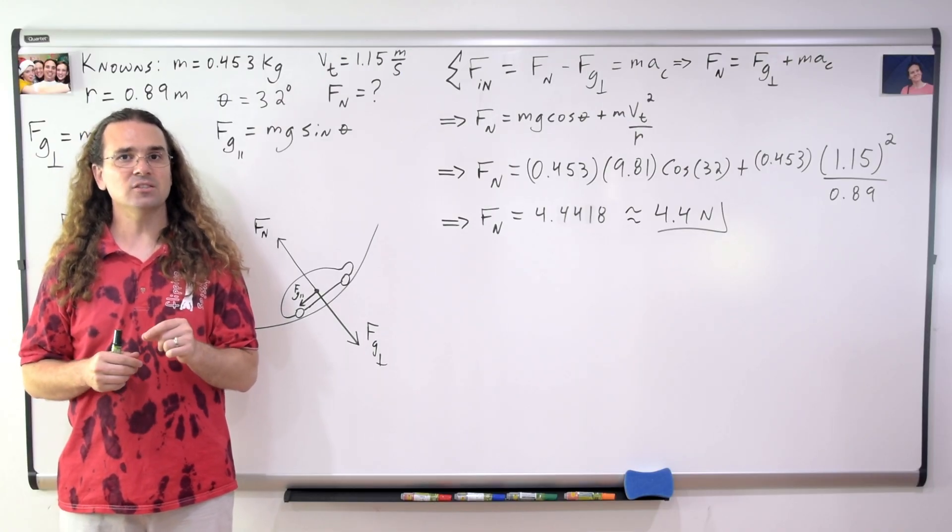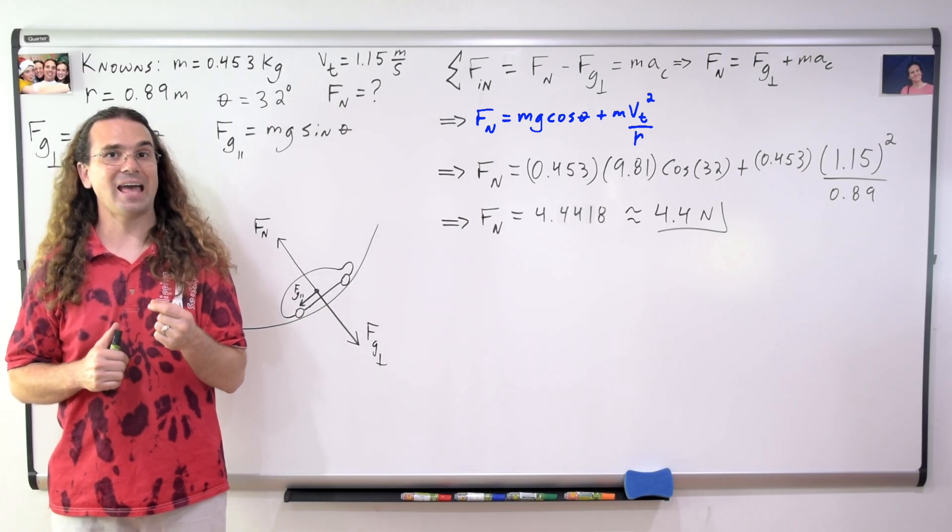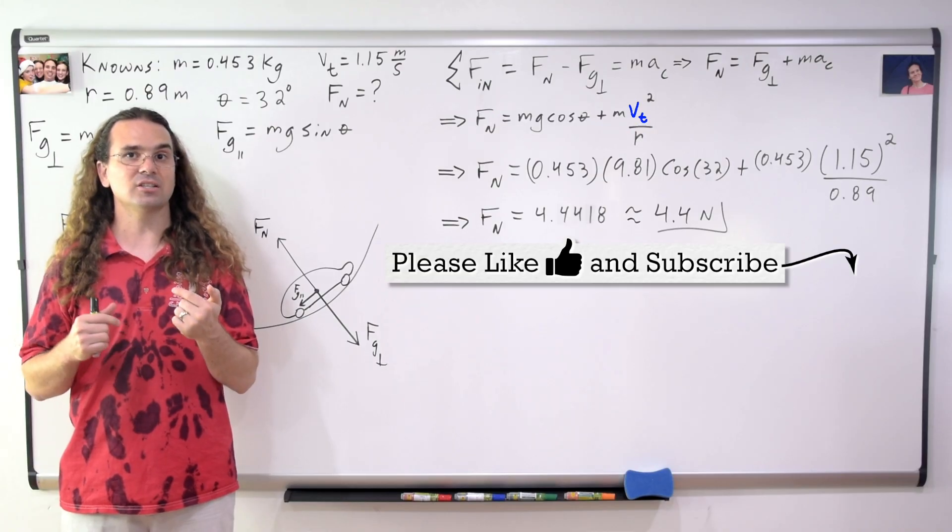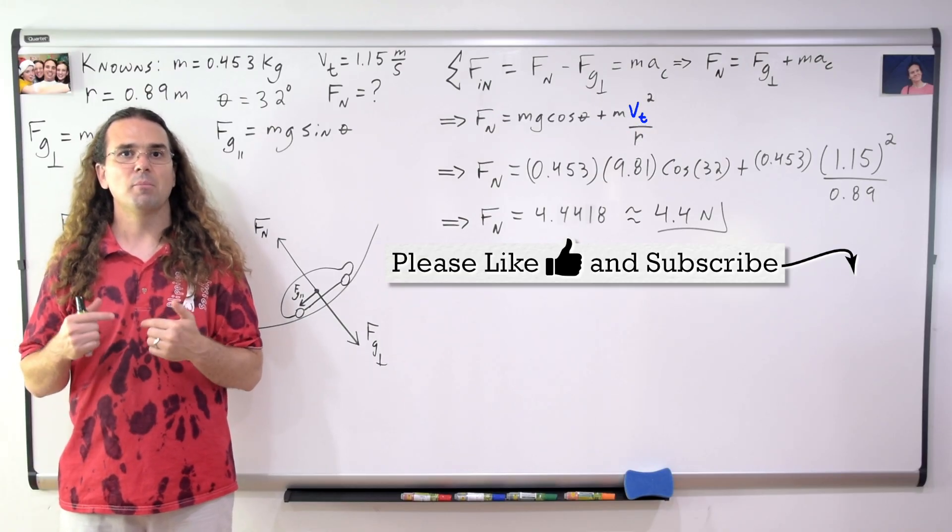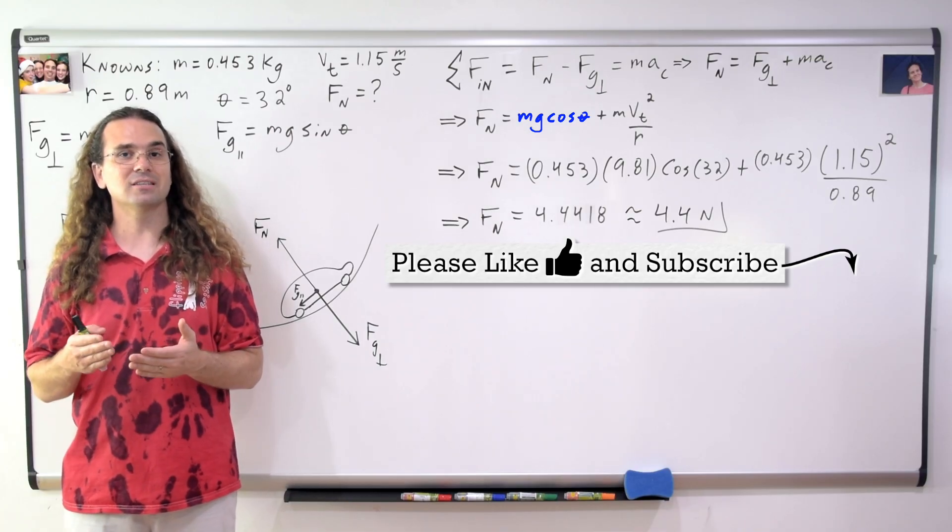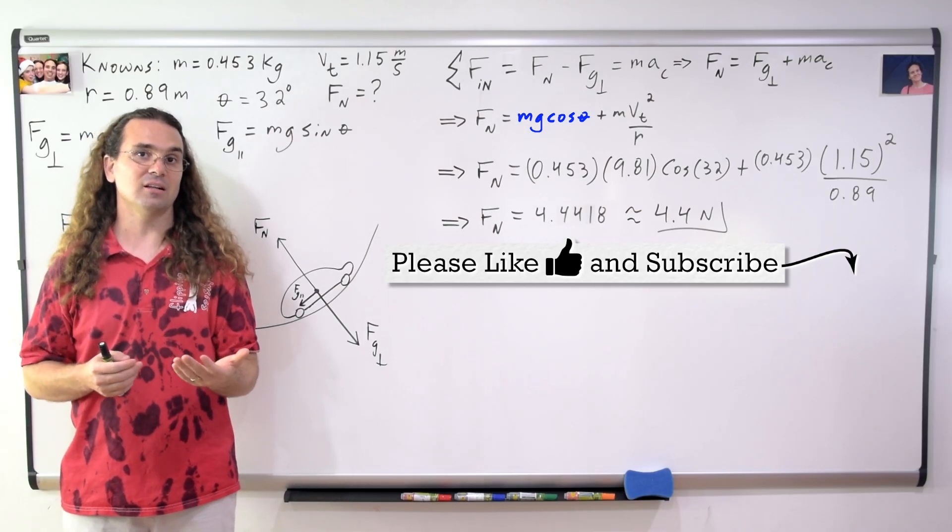Second, the magnitude of the force normal decreases as the car goes up the hill, both because the instantaneous tangential velocity of the car is decreasing, but also because the force of gravity perpendicular decreases as theta, the angle of the hill, increases.